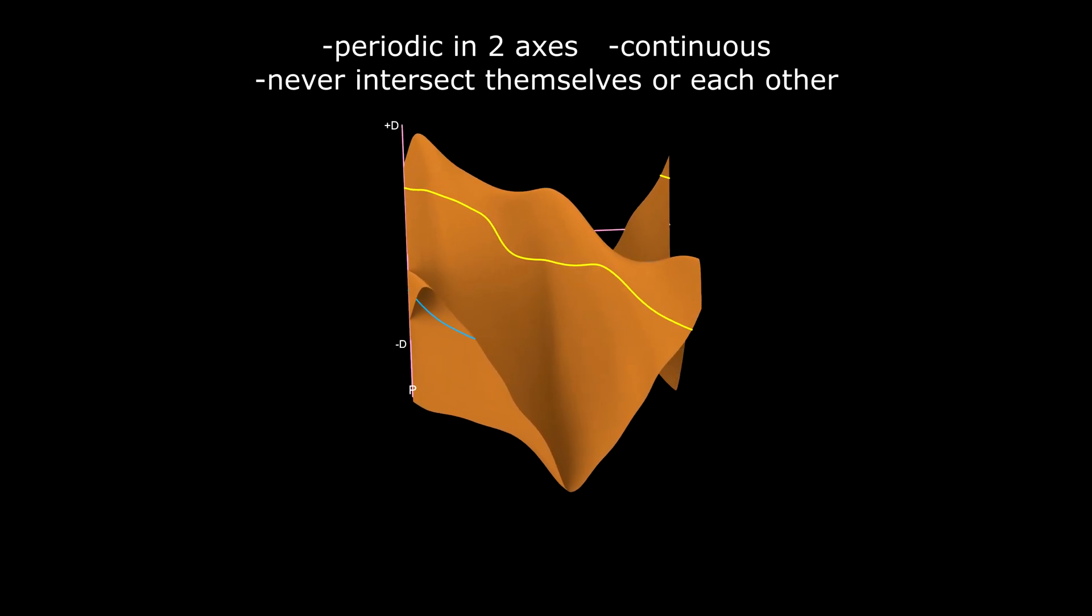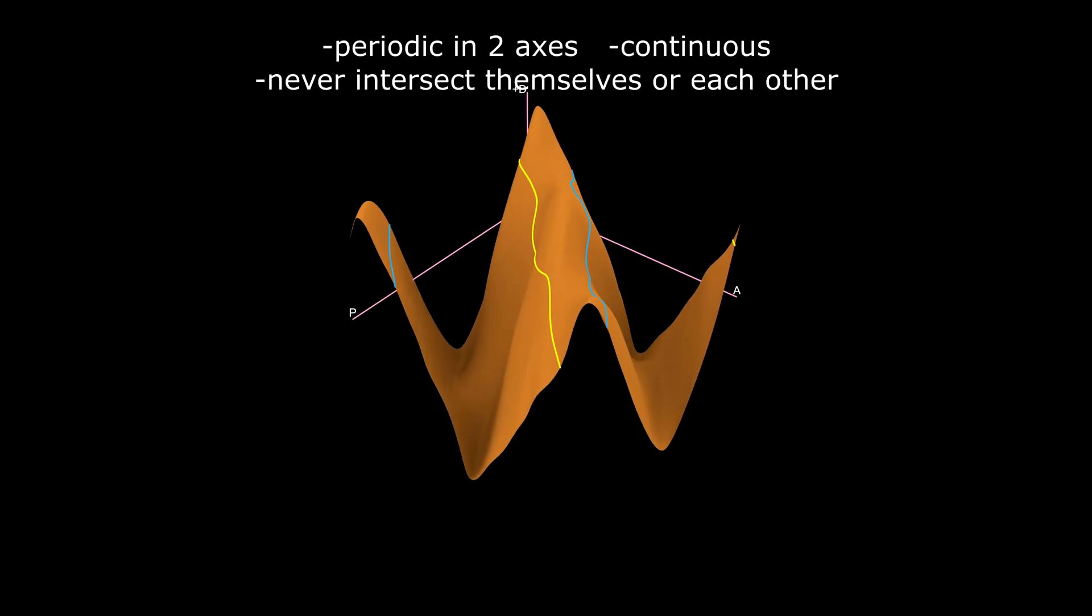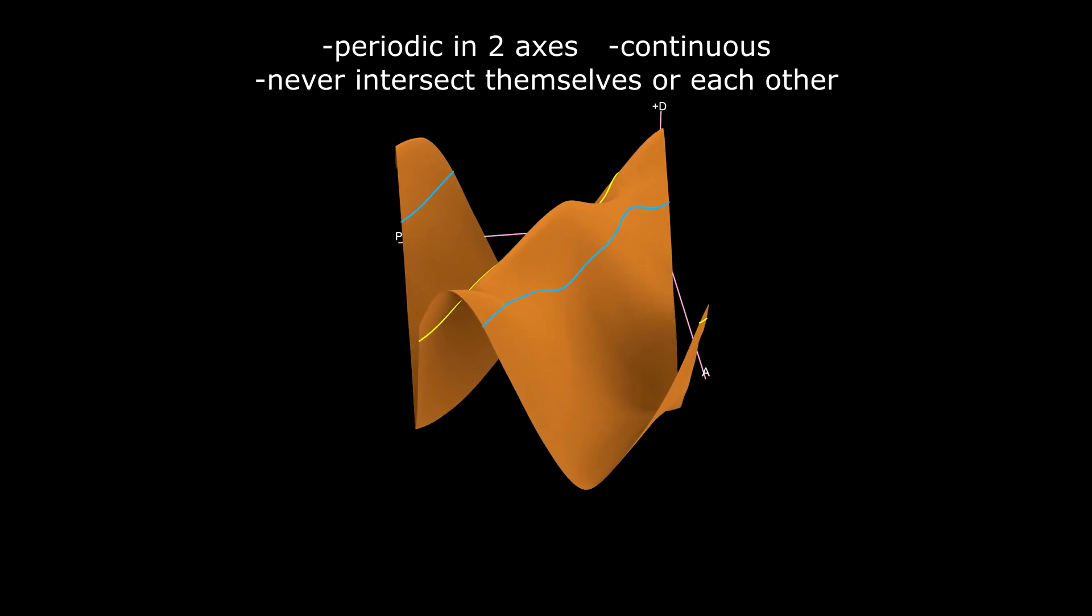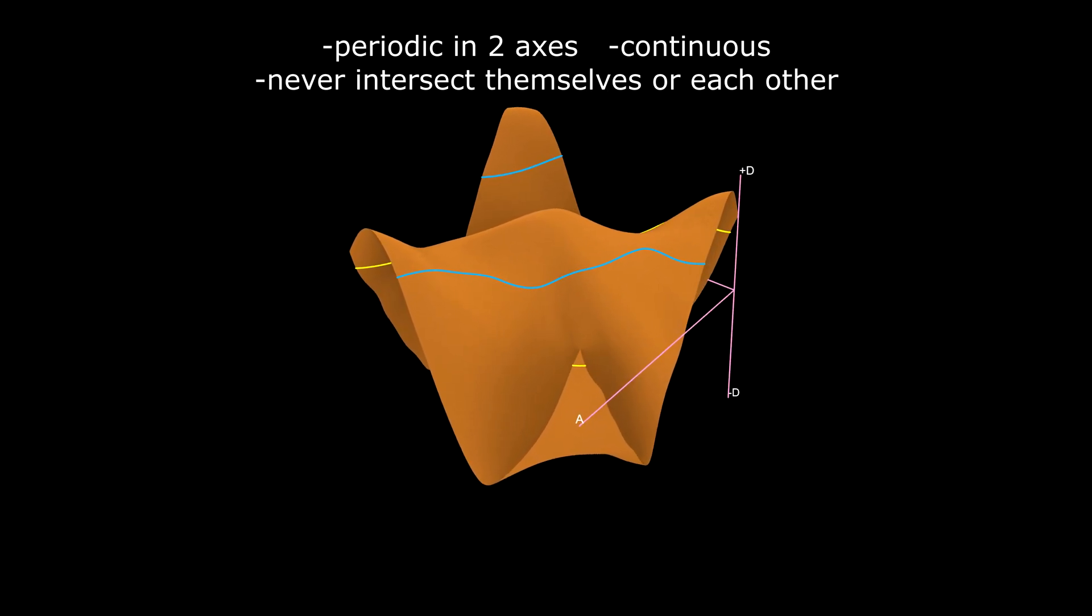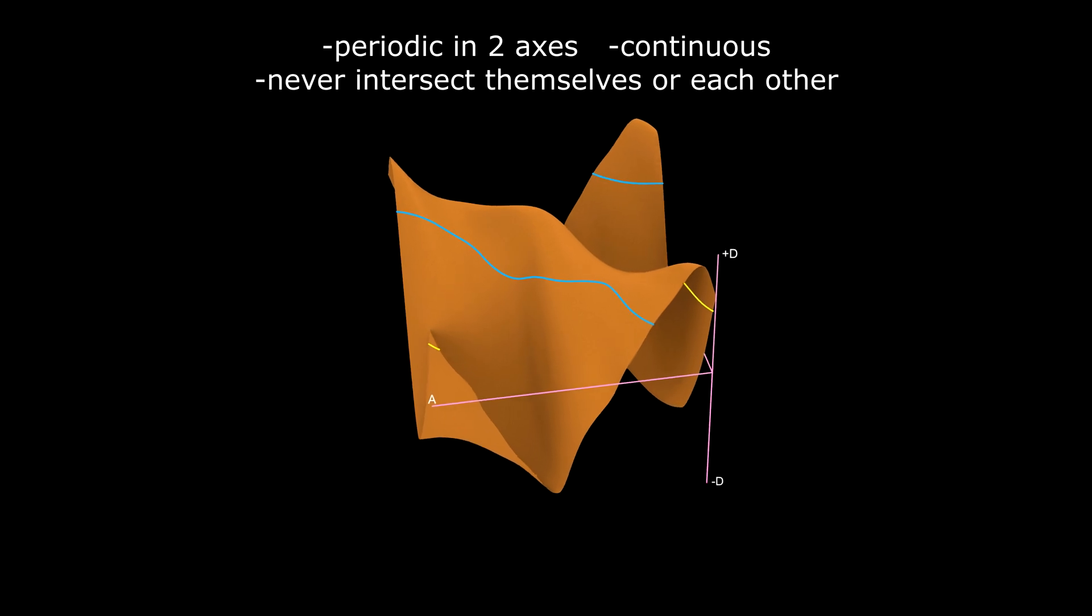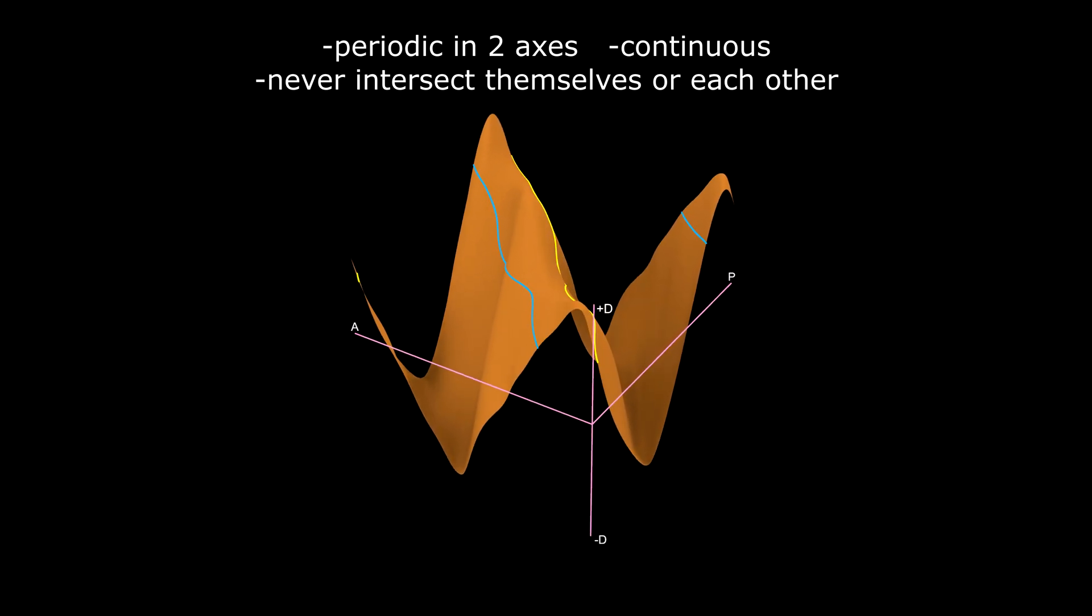They are periodic in two axes. Note that this periodicity is kind of diagonal. Also they are continuous, no matter how complex the primary curve is. Curves never intersect themselves and each other.